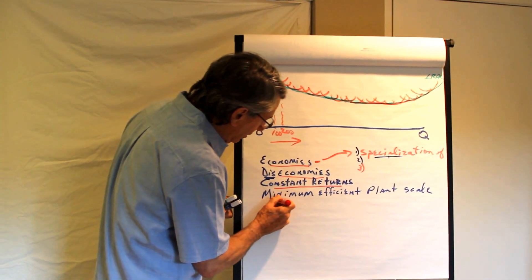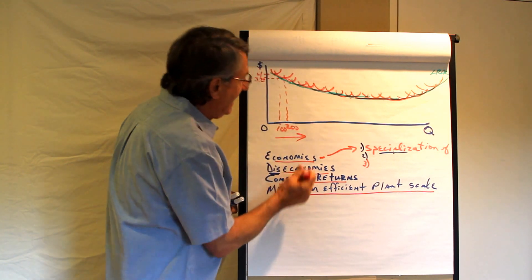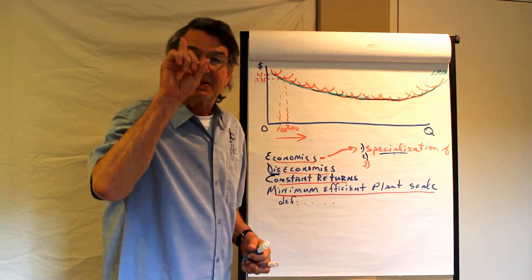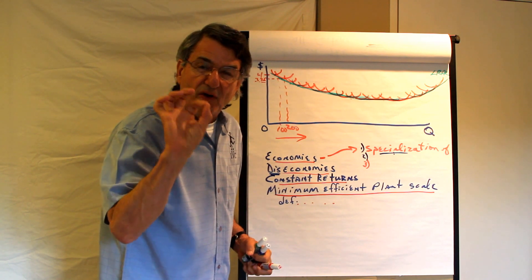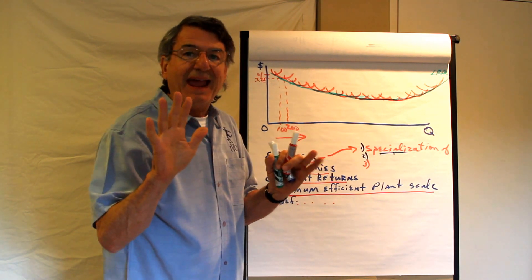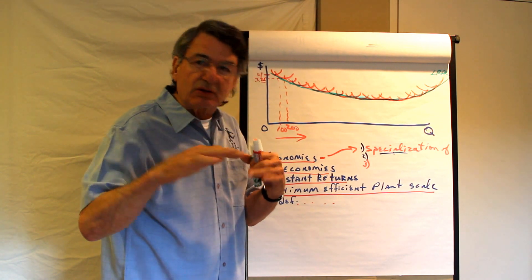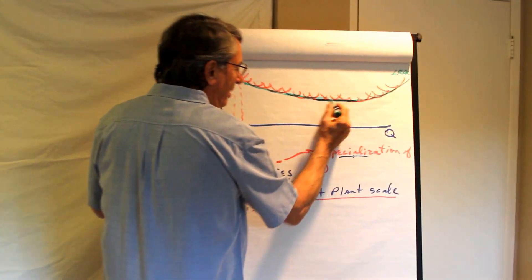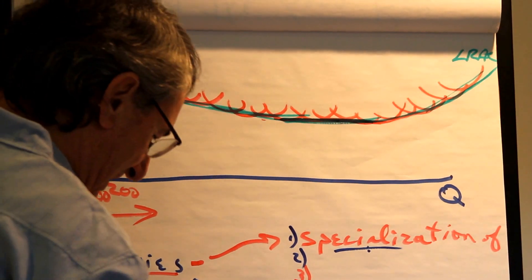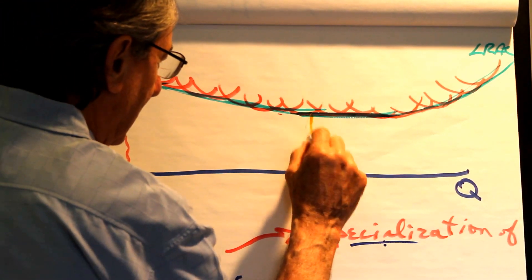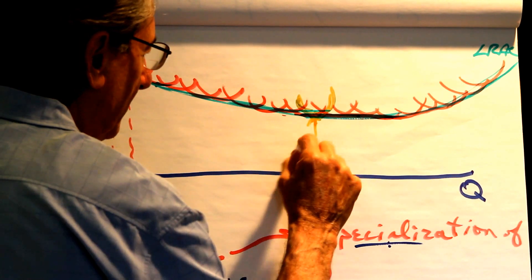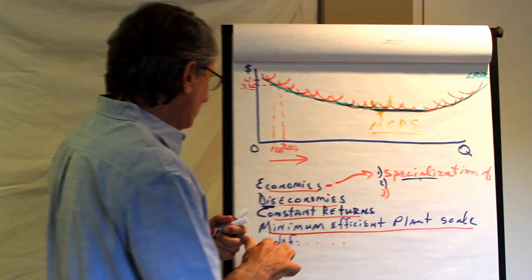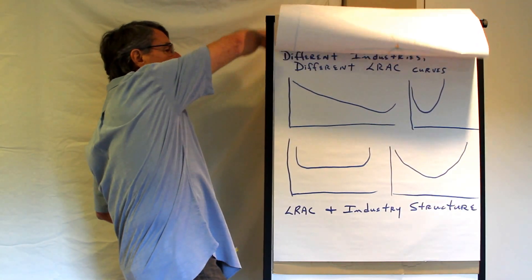Alright. Then there's one other term, the minimum efficient plant scale. And that is the first plant scale at which all economies of scale are exhausted. It's basically the smallest size firm that you can build and be as efficient as any other producer. So in this, it's really the first scale where the long run average cost curve hits bottom. So I would say that it's probably right in here someplace. This would be the minimum efficient plant scale which you can call MEPS if you like. So those are the terms associated with long run costs.